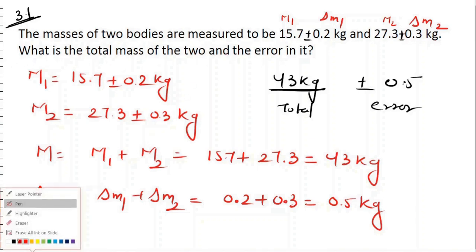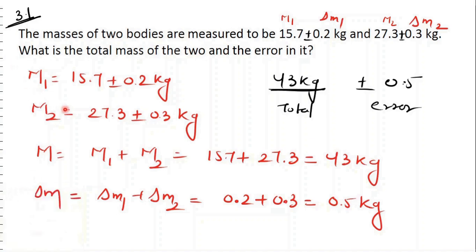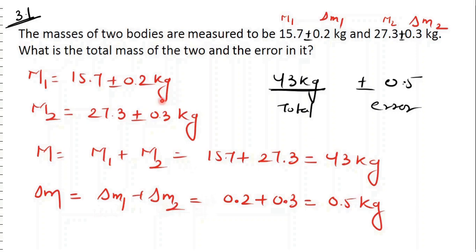We have to calculate two values: the measured value, and the error. We will add the masses: 15.7 plus 27.3. Here we will not add the error with it. And when we have to calculate the total error, we have to add the errors: Del M1 plus Del M2, that is 0.2 plus 0.3, equal to 0.5 kg.